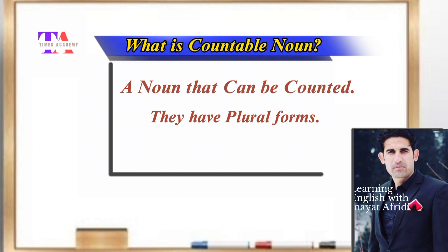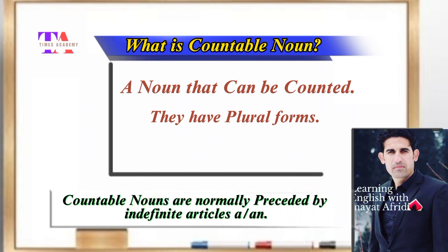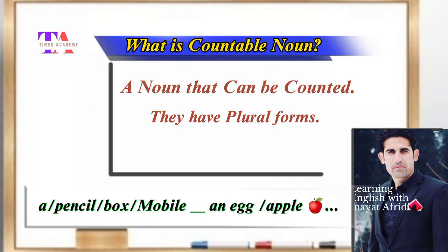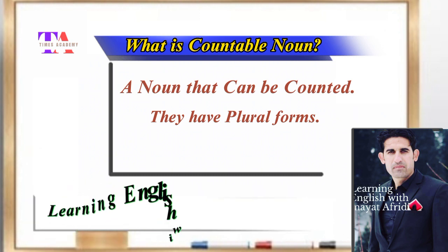One very important thing you need to understand is that countable nouns are normally preceded by indefinite articles, including 'a' and 'an'. Here I have listed four examples: a pencil, a box, a mobile, an egg, an apple, and many more examples we have on the list.